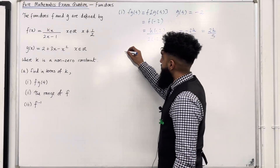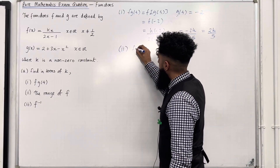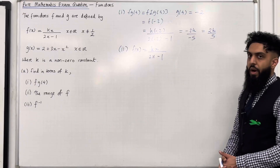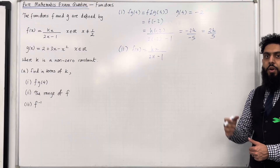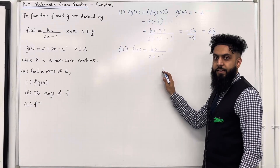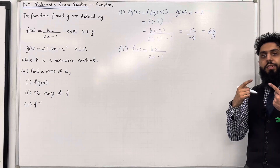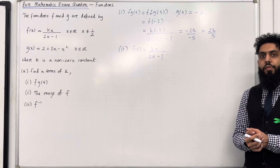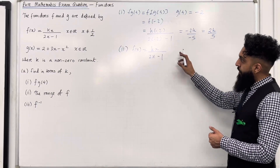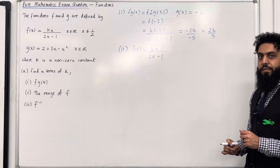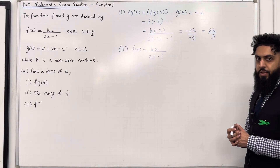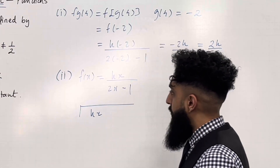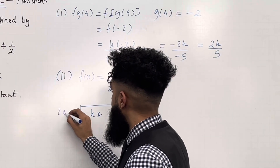Here is the solution to part 2. We've got f of x equal kx over 2x minus 1, which is a rational function. To find the range of f we're going to start by sketching the graph of f of x. We can split the rational function into a quotient plus remainder over divisor by applying polynomial division. Inside the division sign I put kx and outside I put the divisor 2x minus 1.